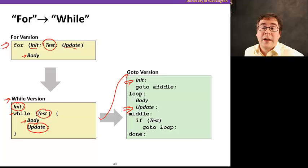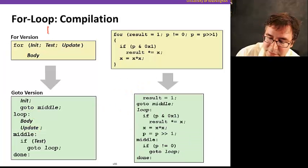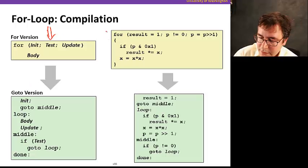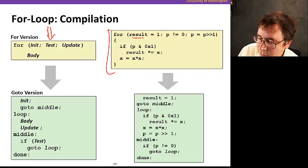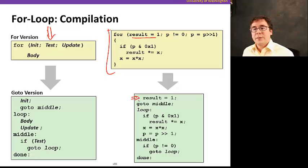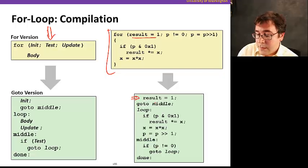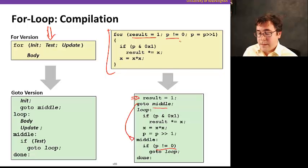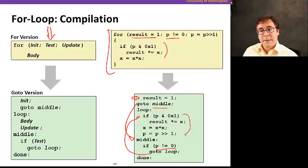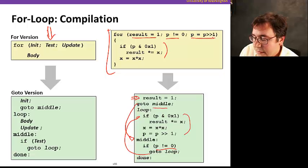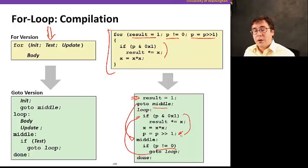Let's apply this to the example from the previous slide. Here's the general version of the loop and the go-to version, and here's the code of our example. Note that the init now appears at the beginning, before you evaluate whether the loop keeps going or not. We have go-to middle here — same as in the while loop — where we jump to evaluate whether the condition holds. If the condition holds, we jump to the beginning of the loop to execute the body. And then the update for the induction variable happens at the end of the body of the loop. So it looks very similar to a while loop.